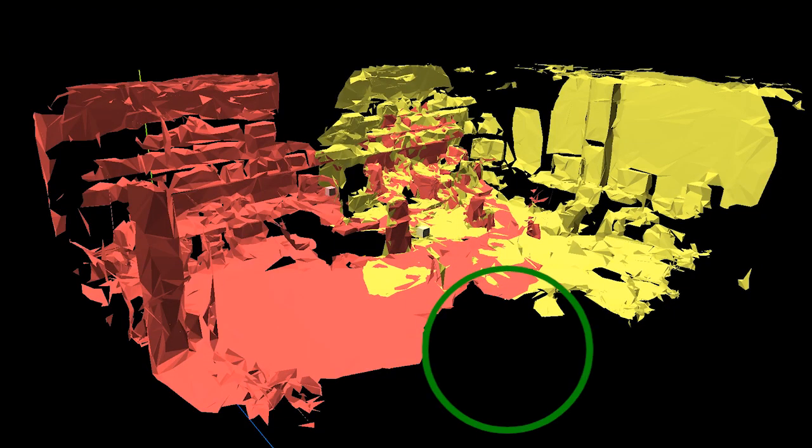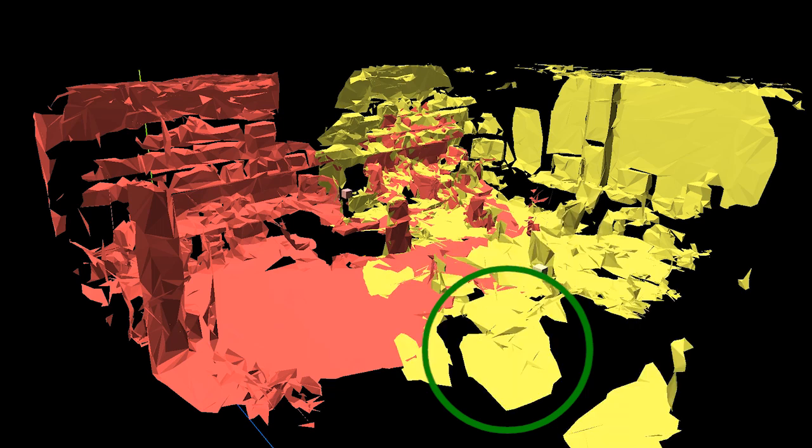Behind the scenes, the orbs are generated at spots in the room that need more scanning. This encourages players to look at these regions and capture additional data that results in a more complete scan.